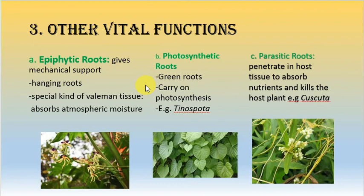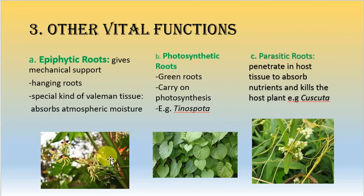The adventitious root system also modifies for other vital functions. Epiphytic roots give mechanical support to weak plants — these hanging roots have specialized velamen tissue that absorbs atmospheric moisture, as seen in orchid roots. The photosynthetic root system, seen in Tinospora, has green roots that can perform photosynthesis — a function generally done by leaves.